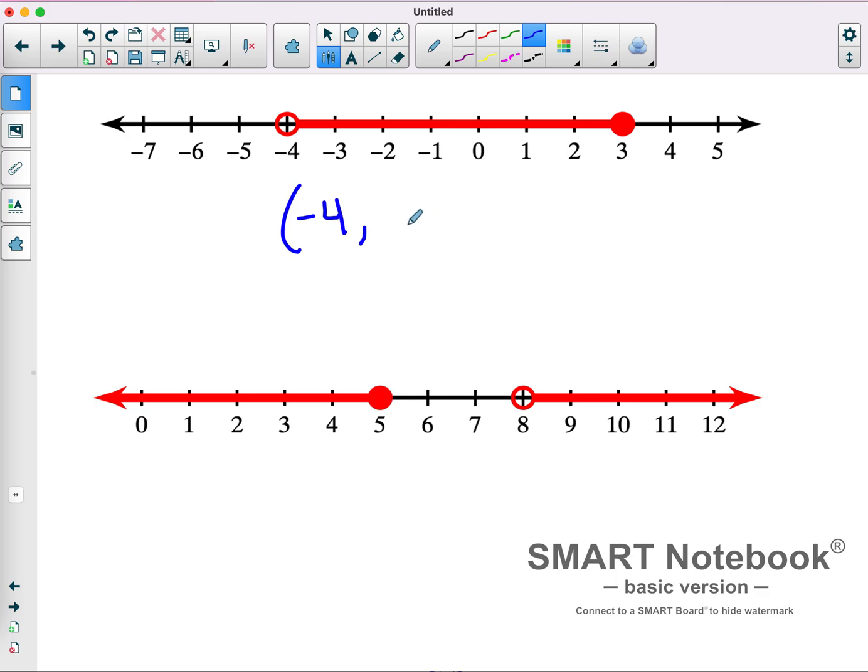All the way up to 3 with a bracket. That's including every number between negative 4 and positive 3.